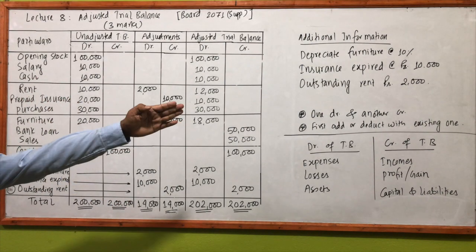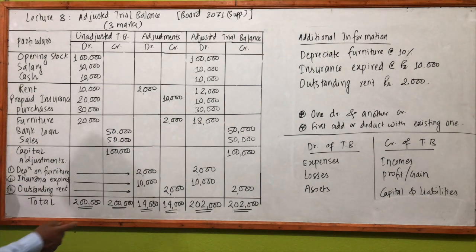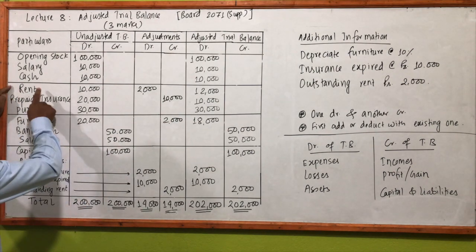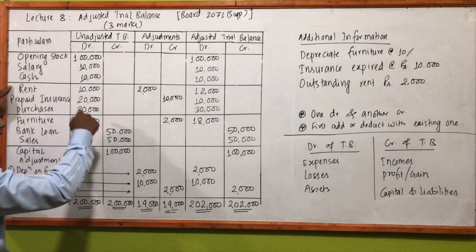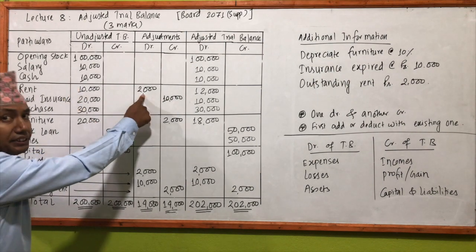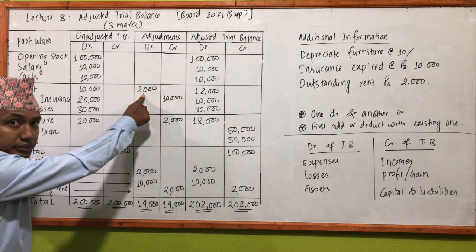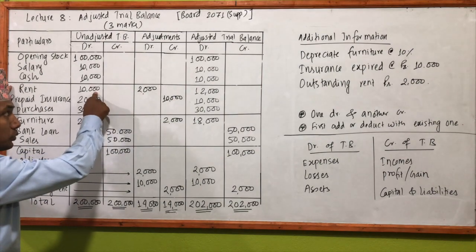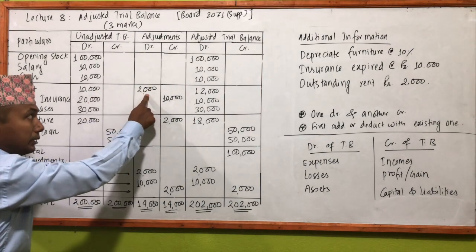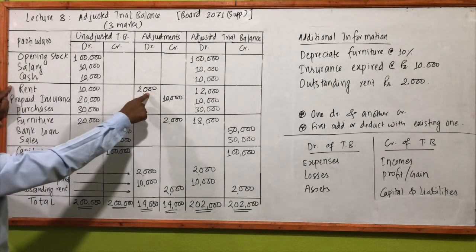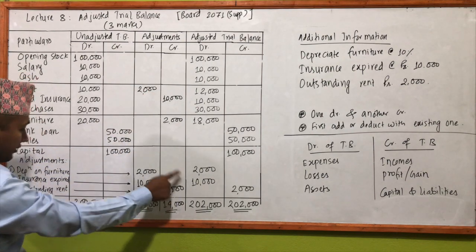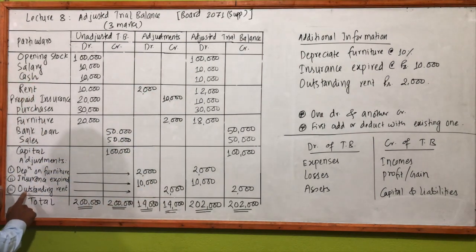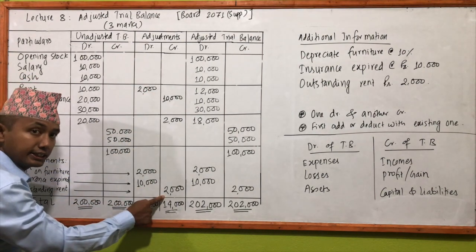Outstanding rent is 2,000. You must add this amount. You need to enter it in debit — outstanding rent goes to debit — and the corresponding credit entry is made on the other side.